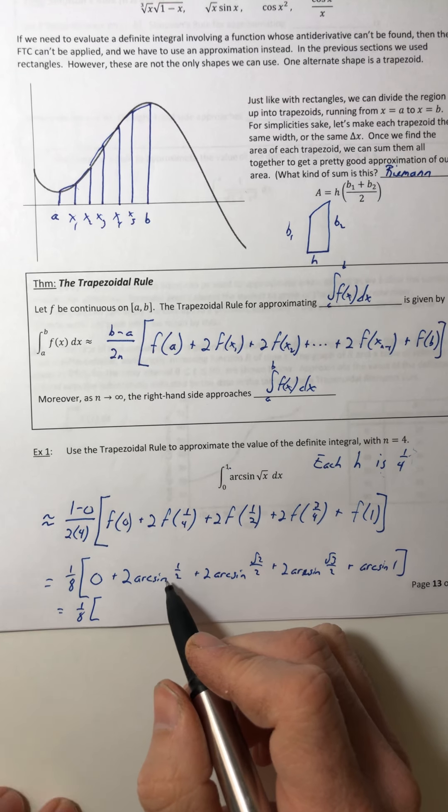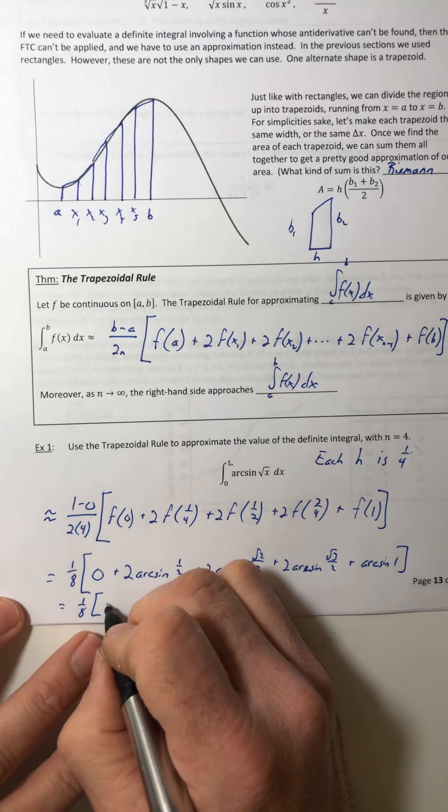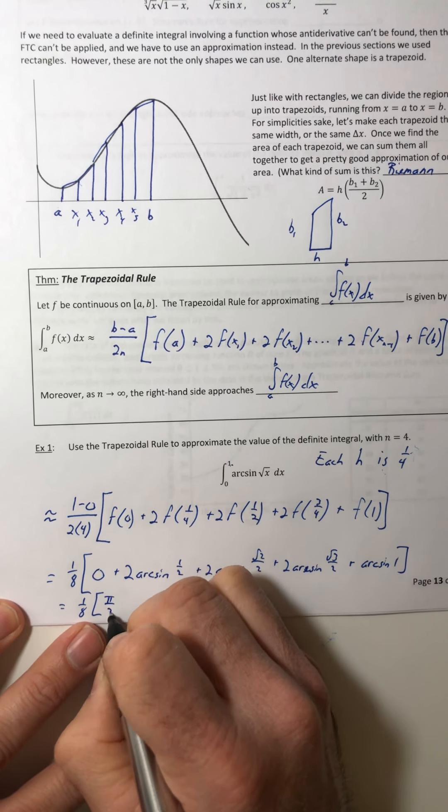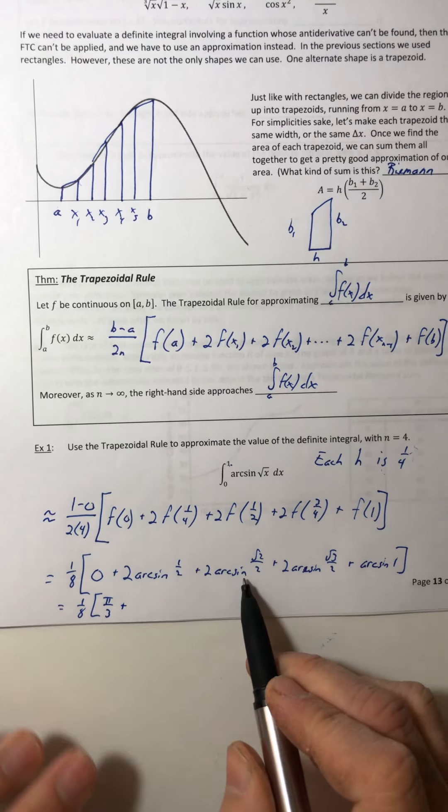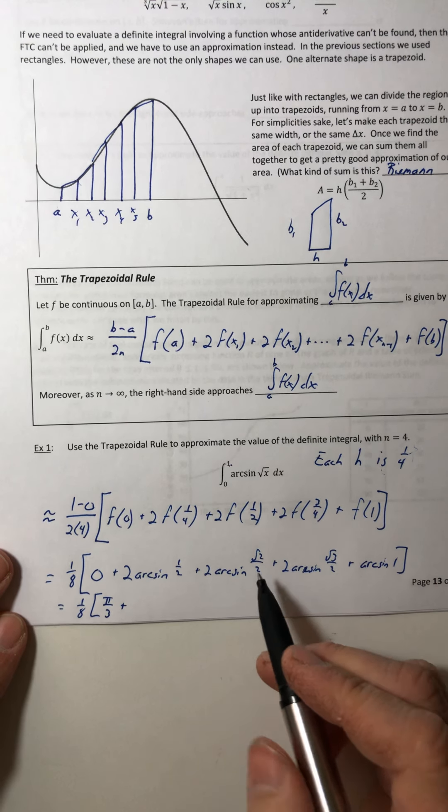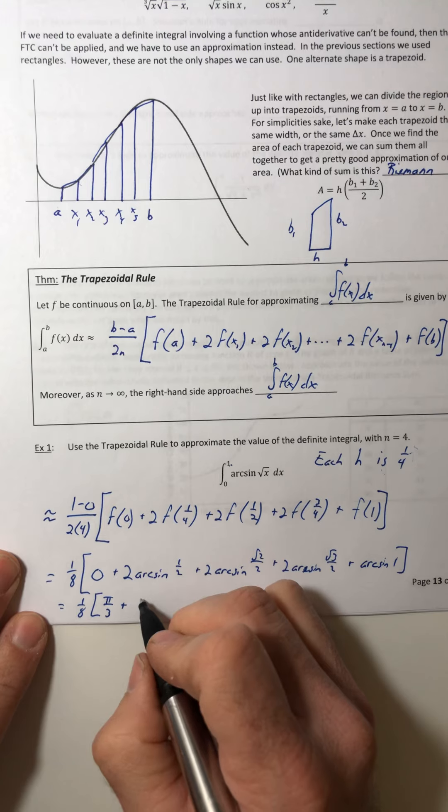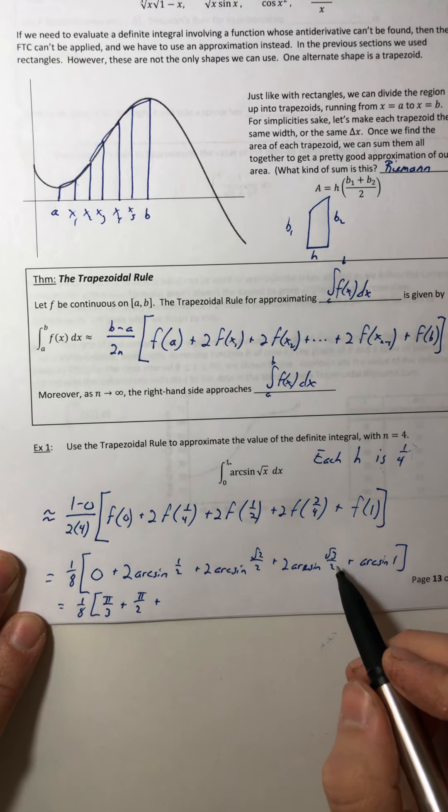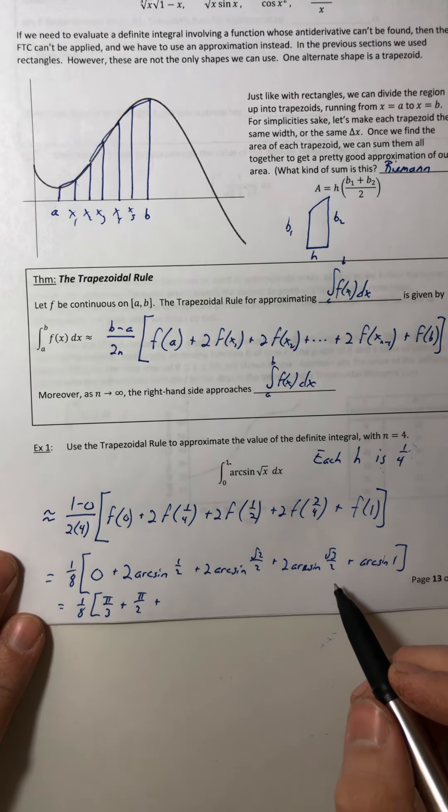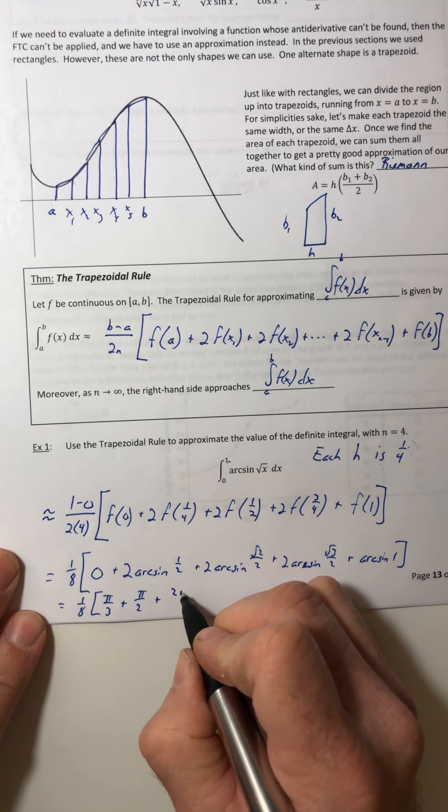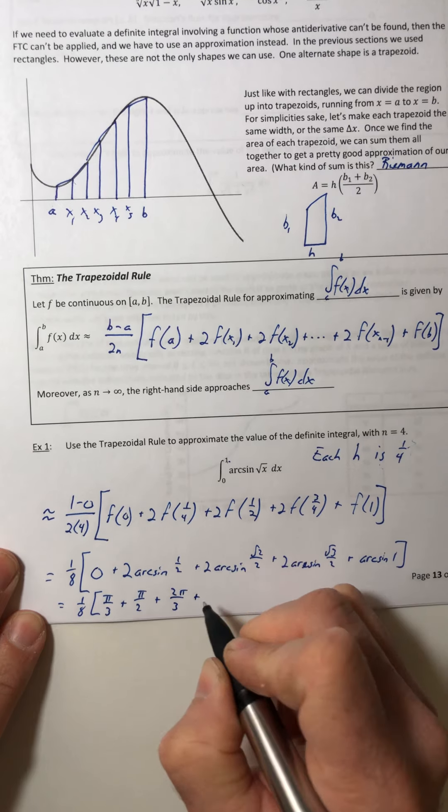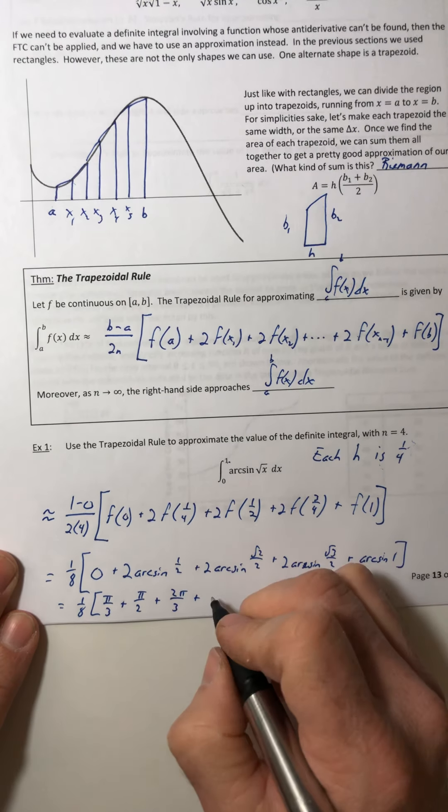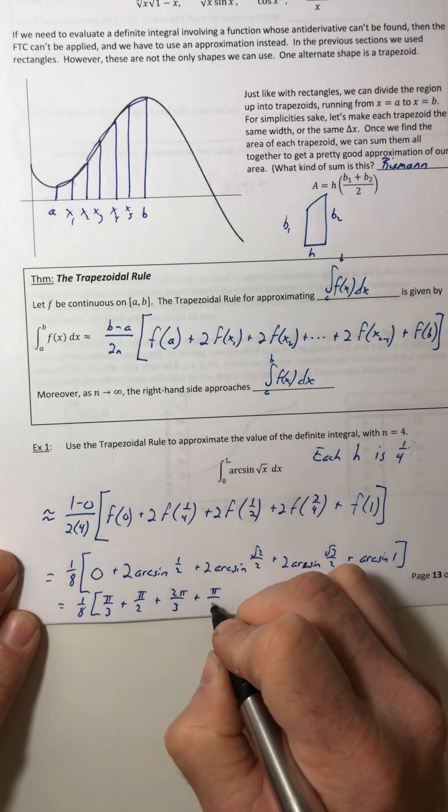All right, arc sine of a half that's pi over six. Two times pi over six is pi over three. Arc sine of root two over two is pi over four, times a half that's pi over two. Arc sine of root three over two, that's pi over three, times two is two pi over three. And arc sine of one, that is pi over two.